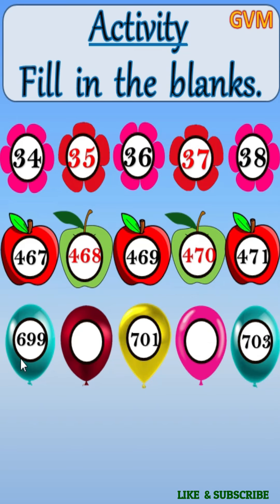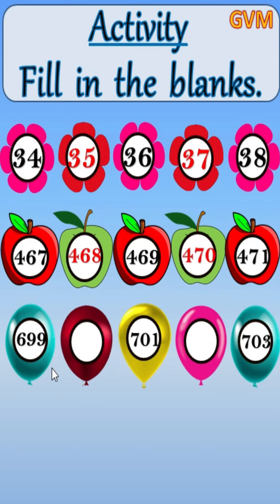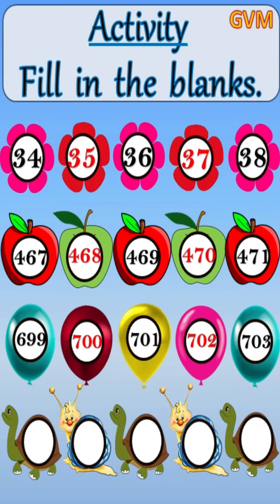So children, here we have been given numbers: 699, 701, and 703. Some numbers are missing here. Between 699 and 701 the missing number is 700. Between 701 and 703 the missing number is 702. In this way you will fill these blanks. Next example is coming.